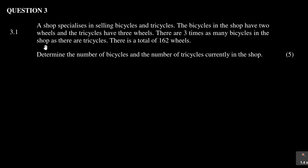Now let us look at question number three. Question 3.1 is a word problem. It is common to get a question of between three to five marks which is a word problem. The question says: a shop specializes in selling bicycles and tricycles. The bicycles in the shop have two wheels and the tricycles have three wheels. There are three times as many bicycles in the shop as there are tricycles. There are a total of 162 wheels. Determine the number of bicycles and the number of tricycles currently in the shop.